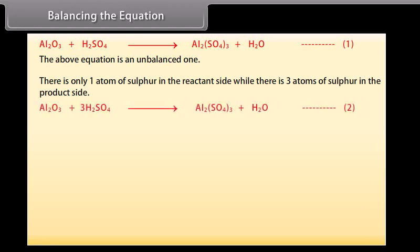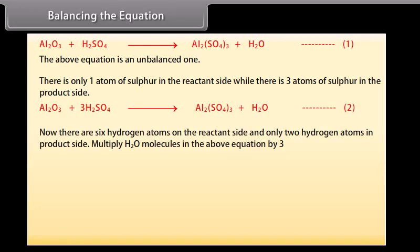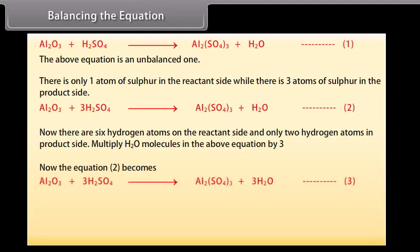Updating equation 1: Al₂O₃ + 3H₂SO₄ gives Al₂(SO₄)₃ + H₂O (equation 2). Now there are six hydrogen atoms on the reactant side but only two hydrogen atoms on the product side. Multiplying H₂O by 3, equation 2 becomes: Al₂O₃ + 3H₂SO₄ gives Al₂(SO₄)₃ + 3H₂O (equation 3).